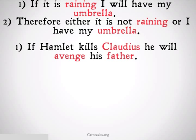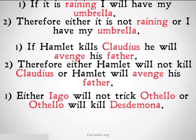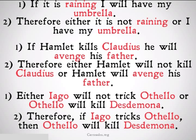Let's take a look at some more examples. If Hamlet kills Claudius, he will avenge his father. Therefore, either Hamlet will not kill Claudius or Hamlet will avenge his father. Either Iago will not trick Othello or Othello will kill Desdemona. Therefore, if Iago tricks Othello, then Othello will kill Desdemona.